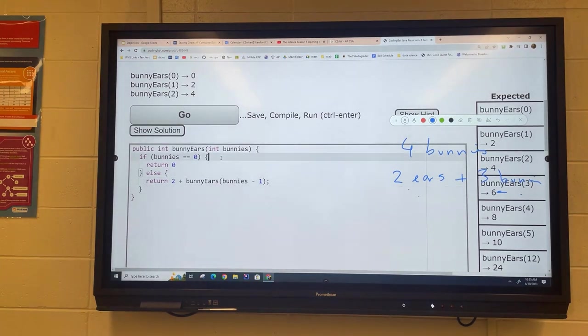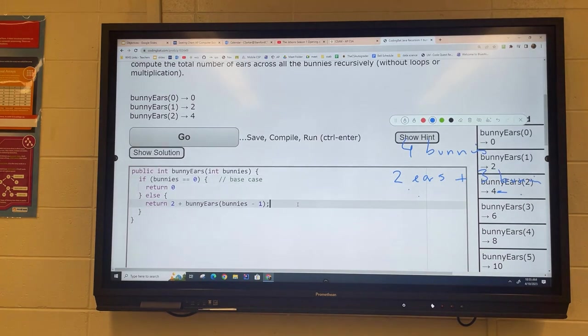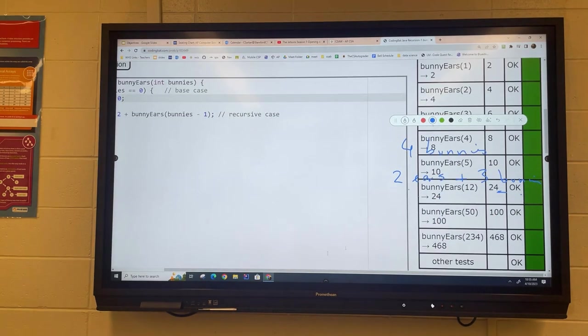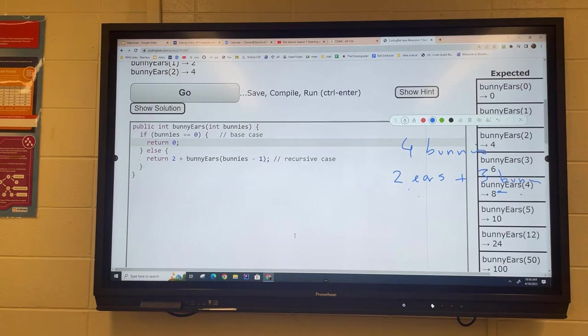And you can see here, now this is my base case, and this is considered my recursive case. You can see that I get the right answer. Now, you might be saying this is an awfully complicated way to avoid multiplying by two, and it is, but this is just to introduce you to the concept.